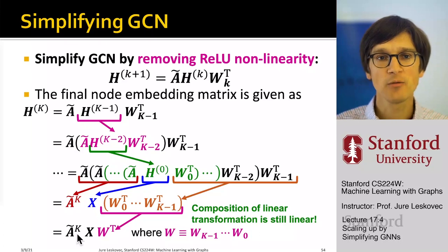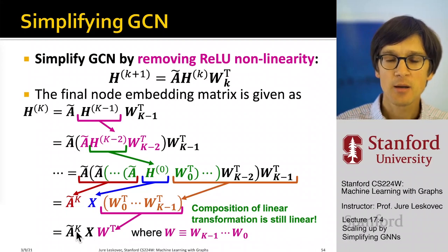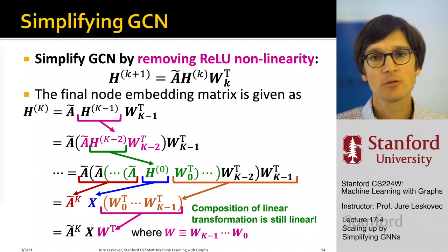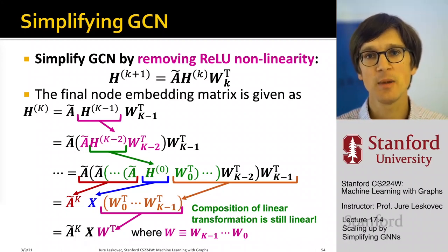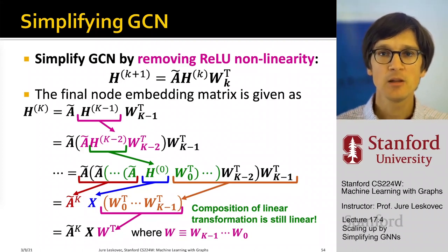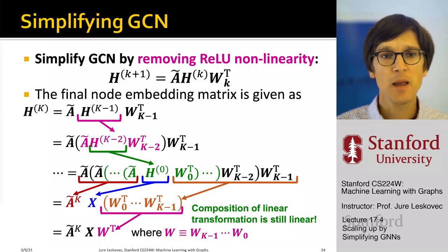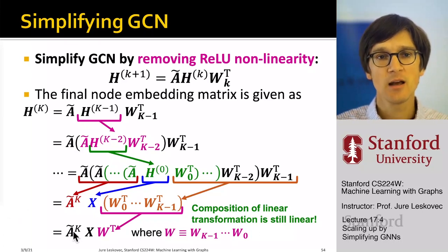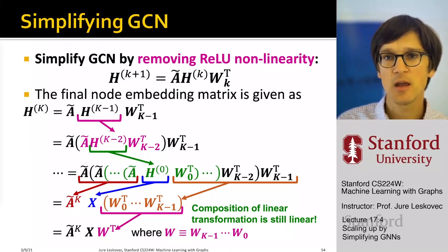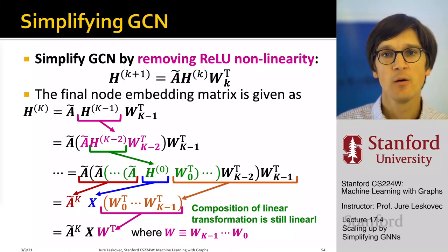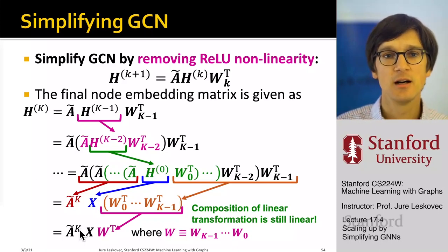What is important to remember about A-tilde raised to the power K? In lecture 1 or 2, we talked about what powering the adjacency matrix to the K-th power means — it means we are counting paths. It means we are connecting nodes that are neighbors, neighbors of neighbors, and so on. So A-tilde to the K really connects the target node to its neighbors, neighbors of neighbors, neighbors of neighbors of neighbors, and so on, one hop farther out in the network as we increase K.